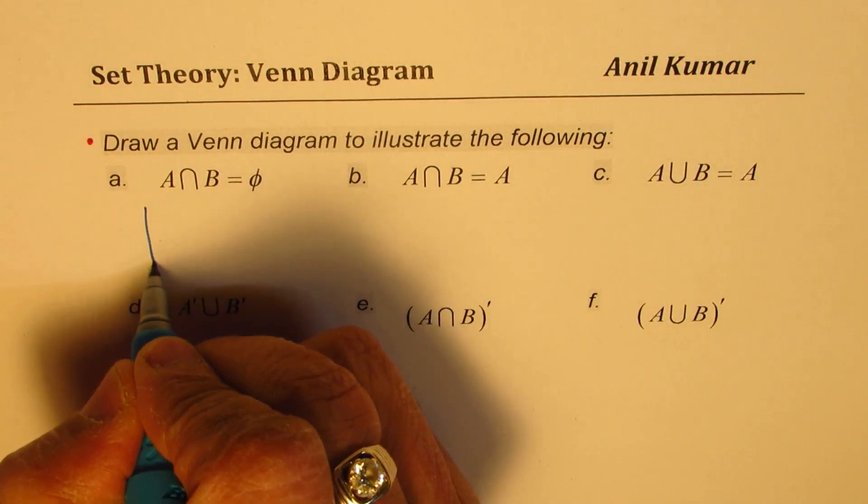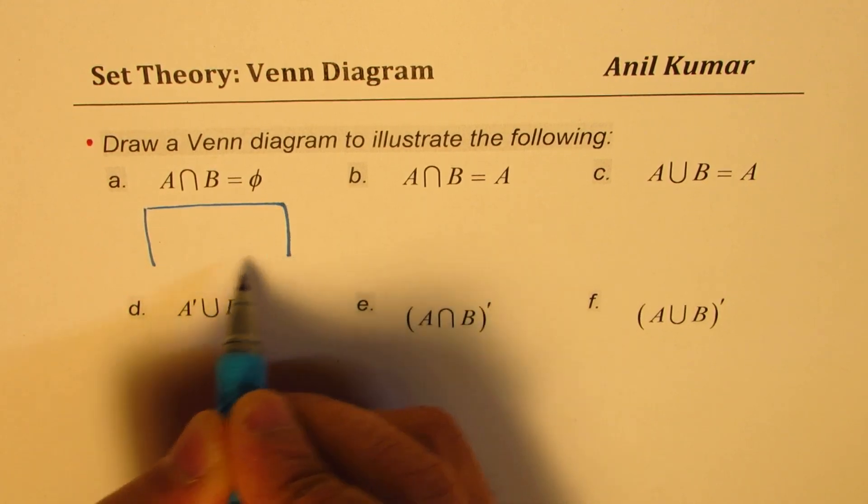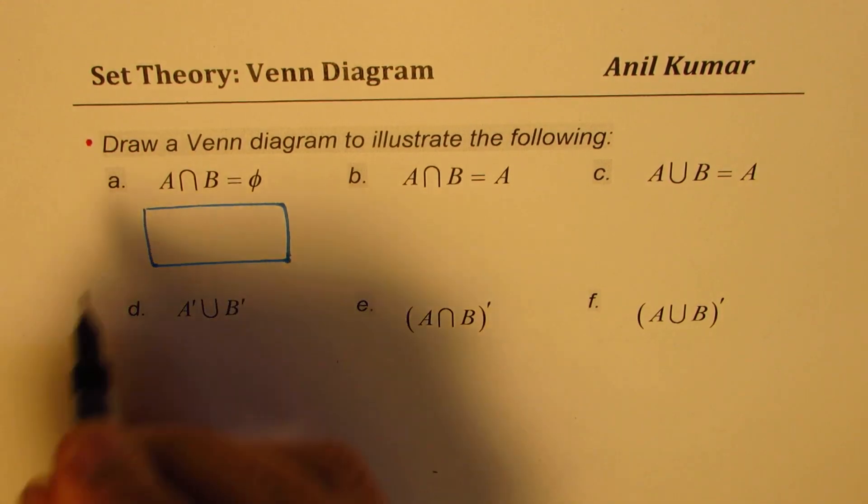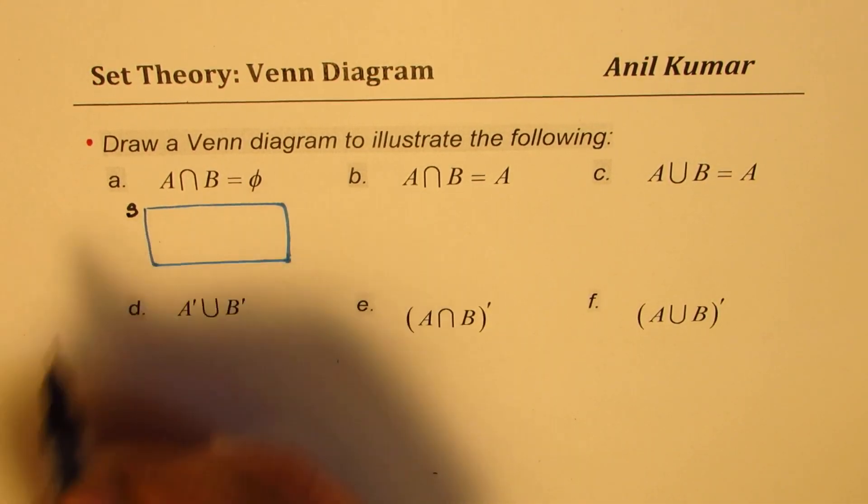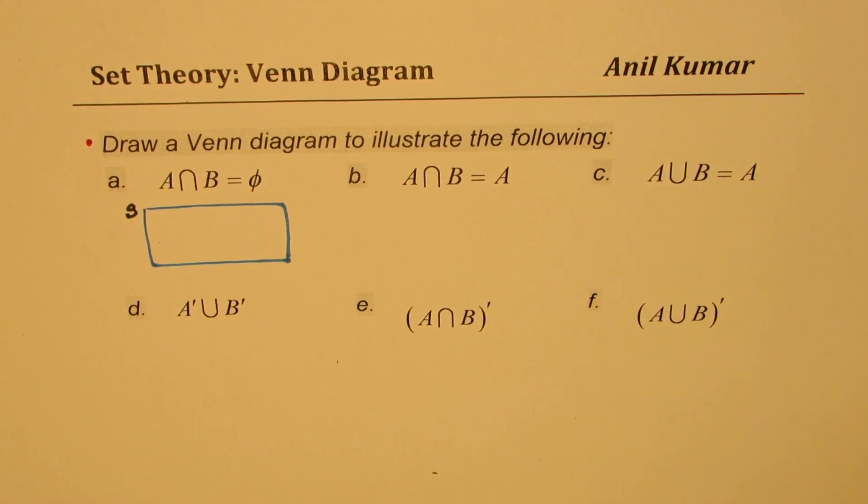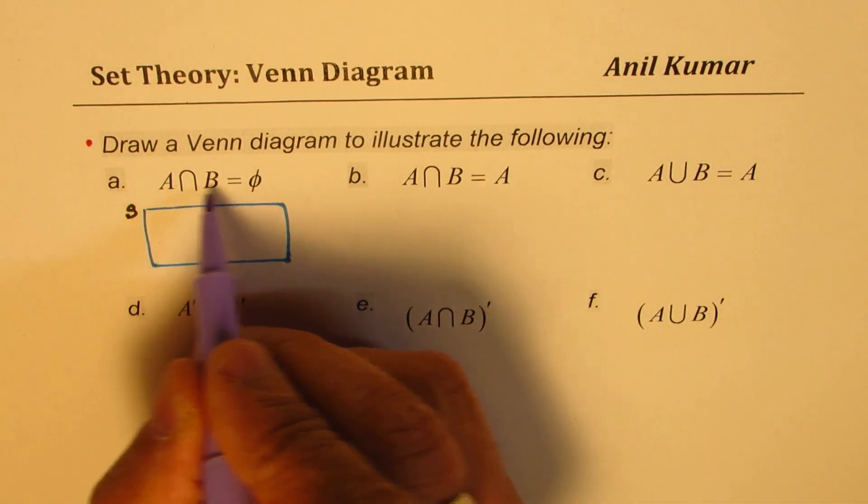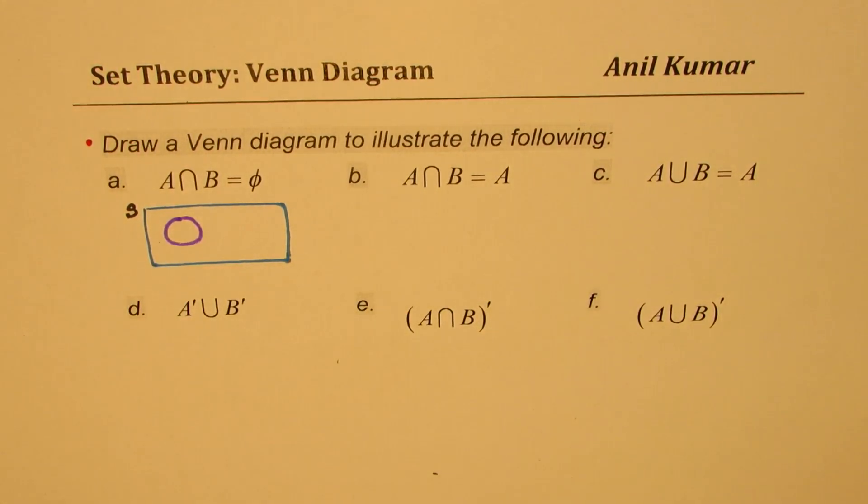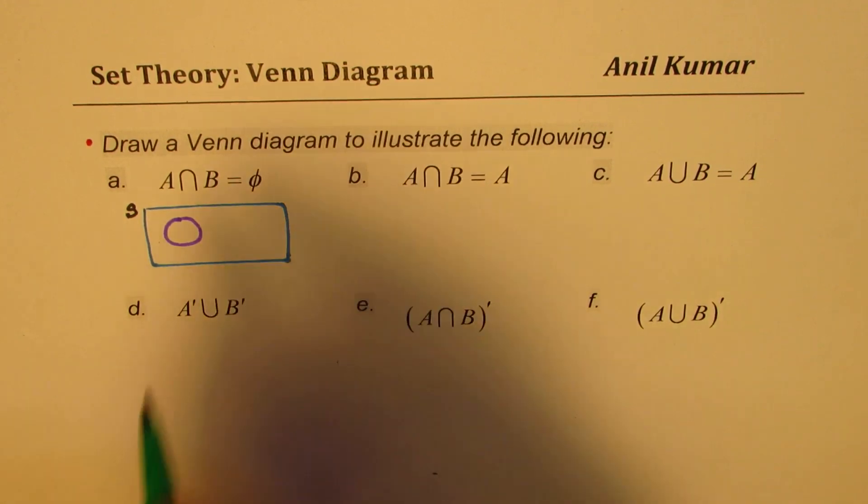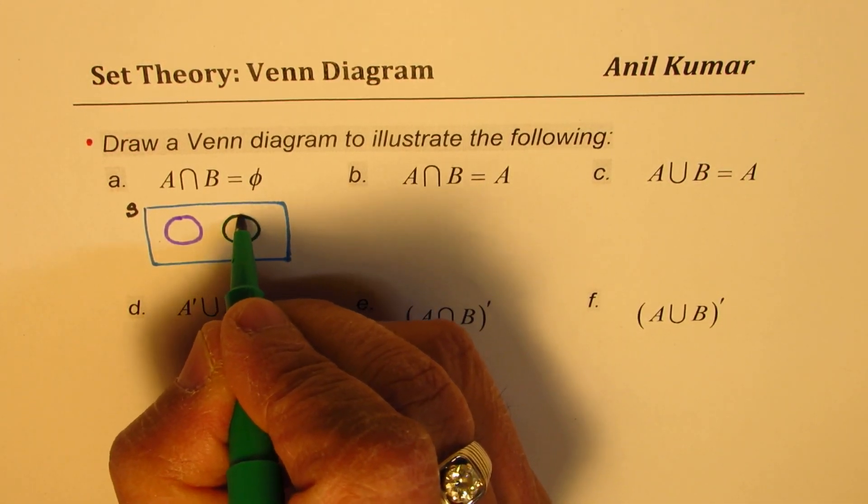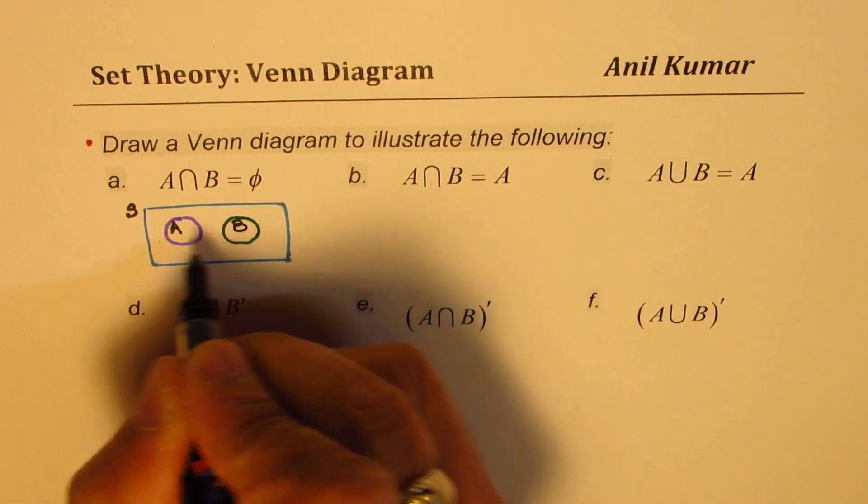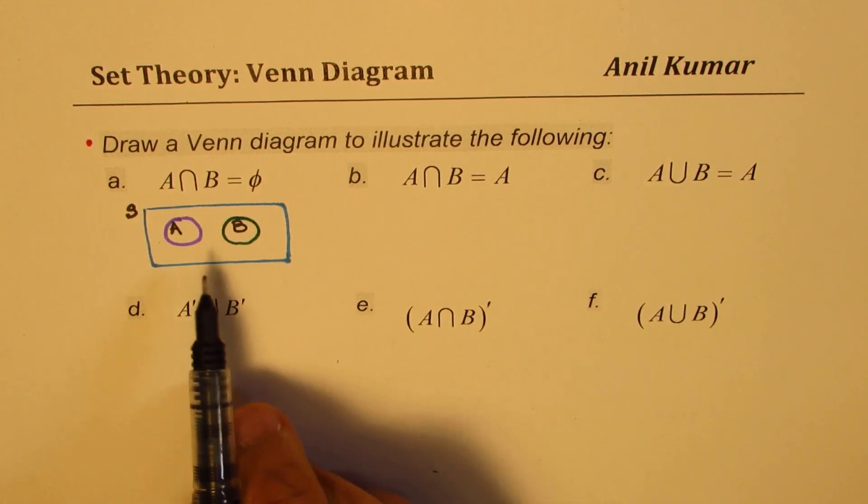The first one here is A intersection B is equal to a null set. It means what? It really means that if I'm taking any universal set S, in that I have two sets A and B which nothing in common. So basically these are my two sets. This is my set A and the other set B is like this. And they have nothing in common. So this is set A and this is set B with nothing in common. That is how you represent A intersection B as a null set.